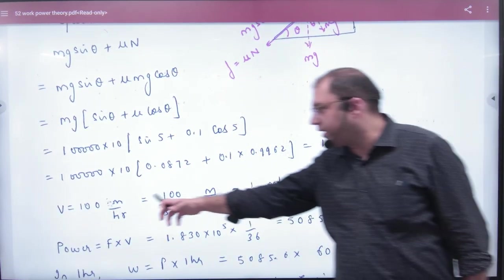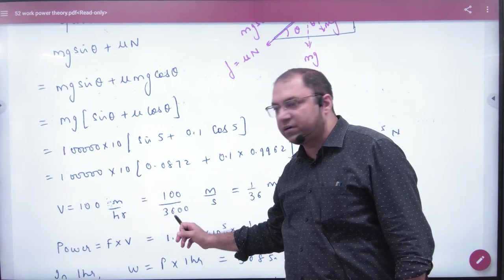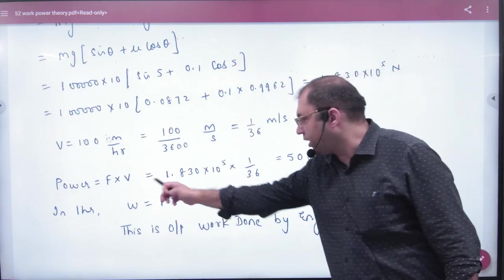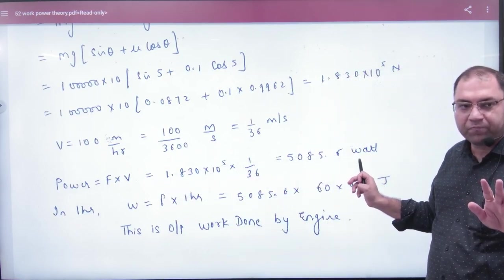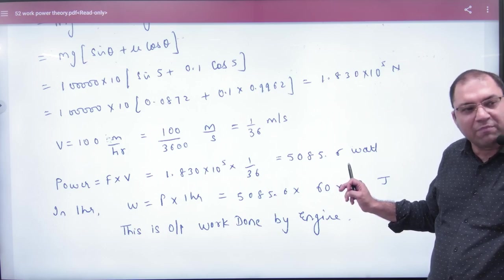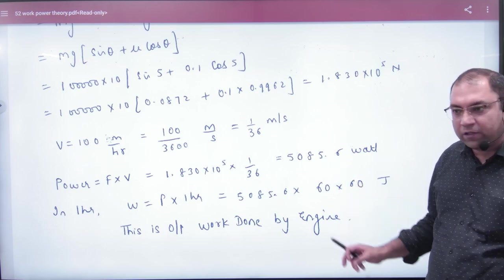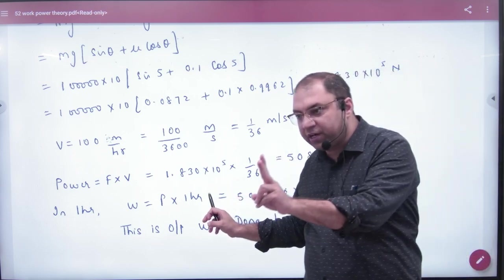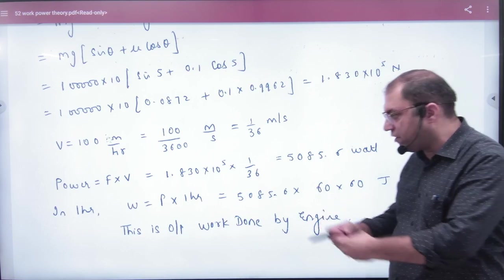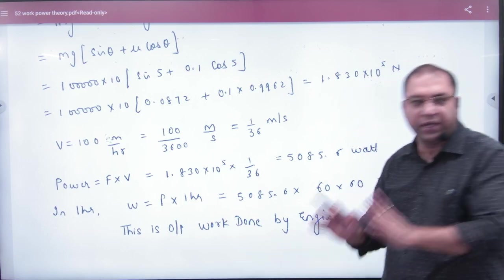Velocity is given as 100 meter per hour - convert this to meter per second. If you multiply force by velocity, you get power in watts. To find energy, multiply power by time. So multiply power by one hour converted to seconds, and you get the work done in joules that the engine performed in one hour.